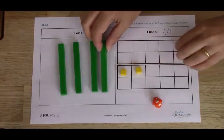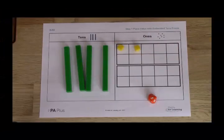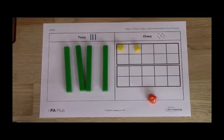The key thing to remember when playing this game is that when regrouping takes place the same number is represented two different ways. The speaking frame supports this and ensures that the children can articulate the same value represented in two different ways.